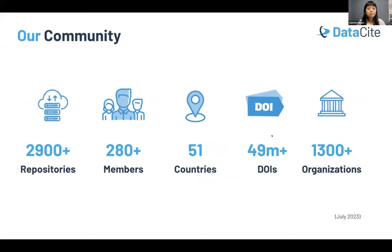Our community is currently composed of more than 280 institutional members. From these 280+, we have 57 consortia — groups of organizations that come together to promote and practice a more coordinated adoption approach, for example in a country. Currently, we have members in more than 51 countries.